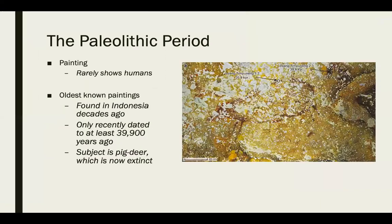As far as painting goes during the Paleolithic period, paintings rarely show humans, which is really interesting. The oldest known paintings are found in Indonesia, discovered only in the late 1990s. They date to around 40,000 years ago. This example we see in this cave is a pig deer, which is now extinct, but we start to see the form, the body, and different things that depict this specific creature.